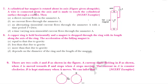Now we are discussing the seventh question. A cylindrical bar magnet is rotated about its axis. A wire is connected from the axis and is made to touch the cylindrical surface through a contact. You can see the cylindrical bar magnet rotating — that's why omega is given here.